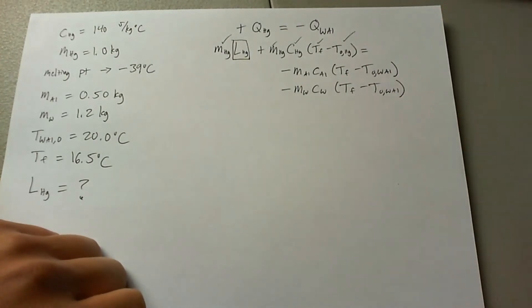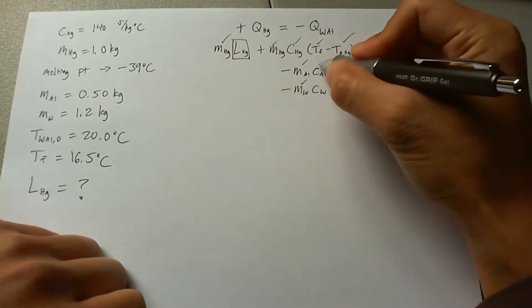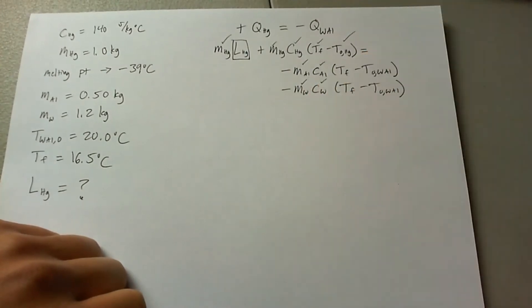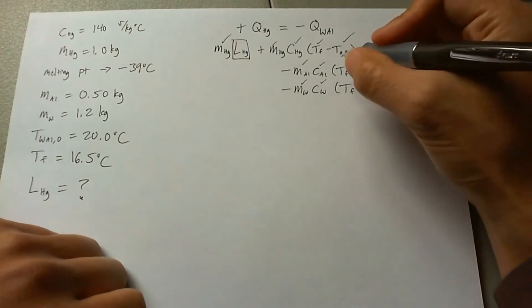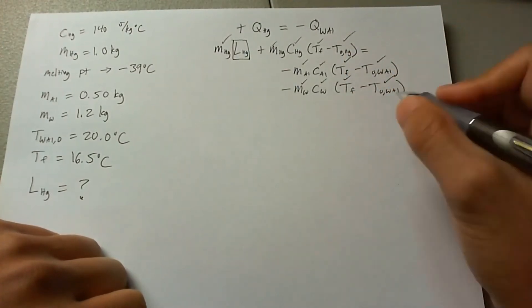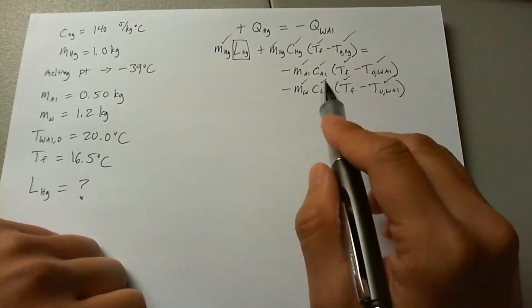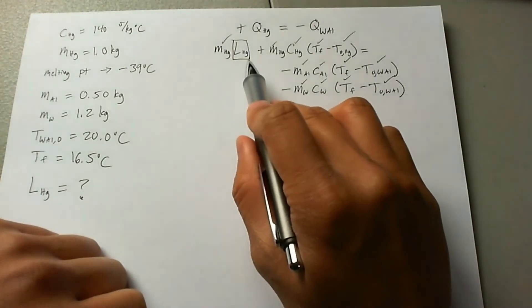We know the mass of aluminum, the mass of water, the heat capacity of aluminum and water just by looking it up online. We know the final temperatures again, and we know the initial temperature of the water aluminum system as well. So this ends up just leaving us with L.